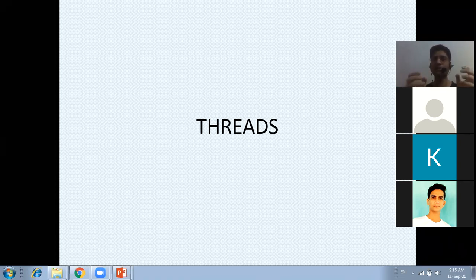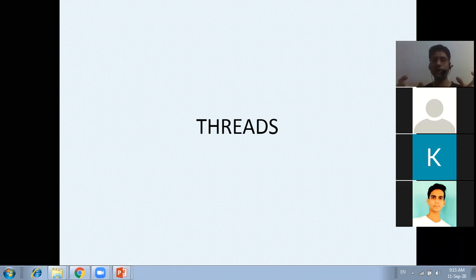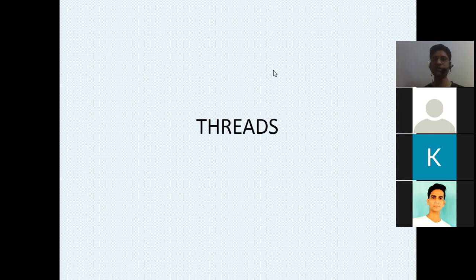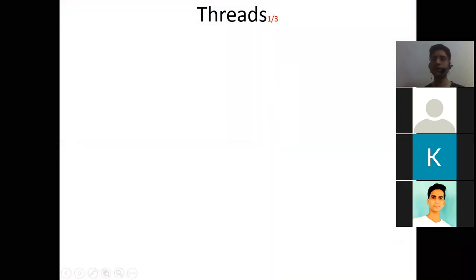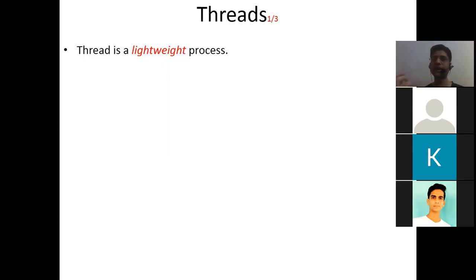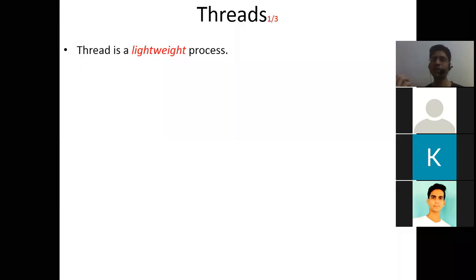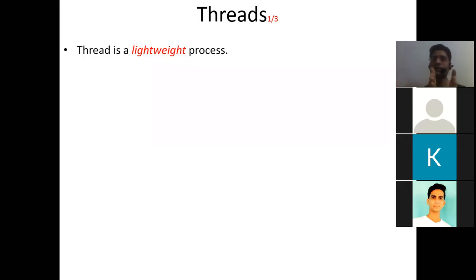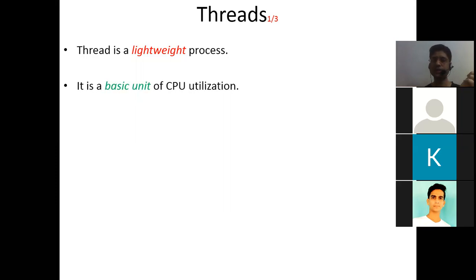Now let's see what a thread is and how we use this real-world thread concept in the operating system. Processes are heavyweight — they use a lot of resources. Thread is a lightweight process. One process can have more than one thread, and these threads can share the same resources of a process. Think of a process as a parent and threads as children. A thread performs only the task it is designed for — it is the basic unit of CPU utilization.